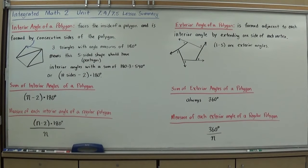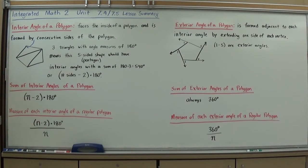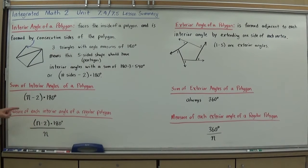Now, if I ask you to find what a single interior angle is — just what one of these angles measures — the sum formula finds the total. But if it's a regular shape, and to remind you, regular means all sides are congruent — every side is the same length — then I can take the total and divide it by the number of angles or sides. So the formula for the measure of each individual interior angle of a regular polygon is (n − 2) × 180, divided by n.